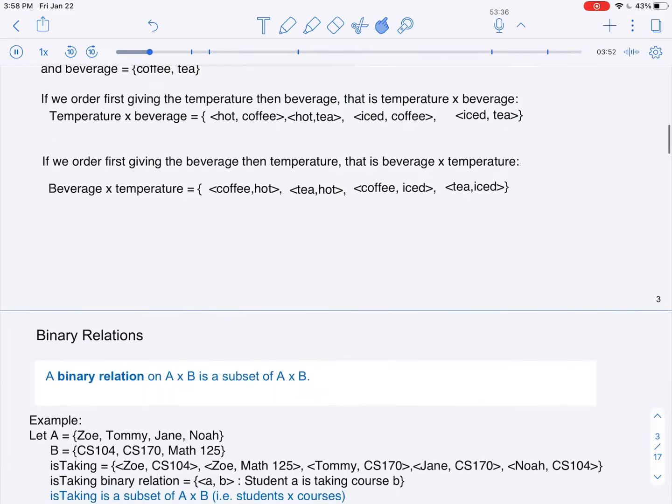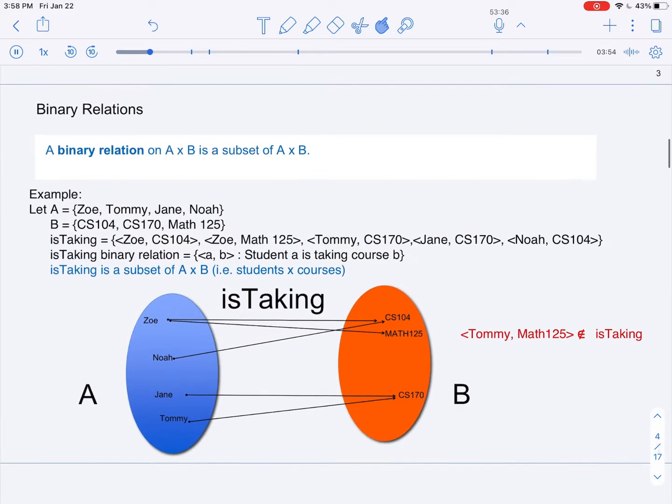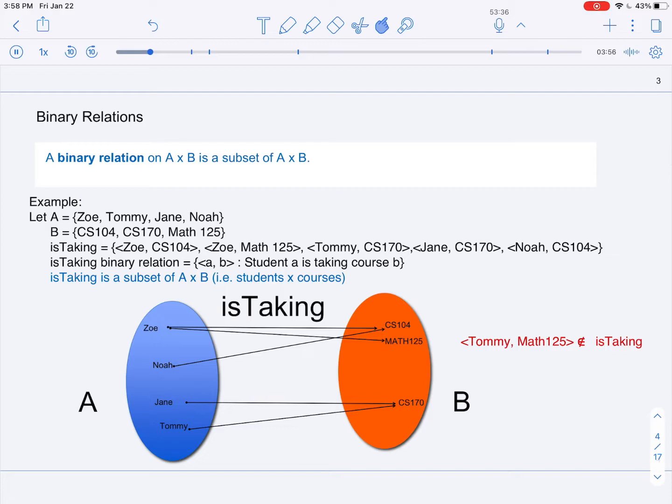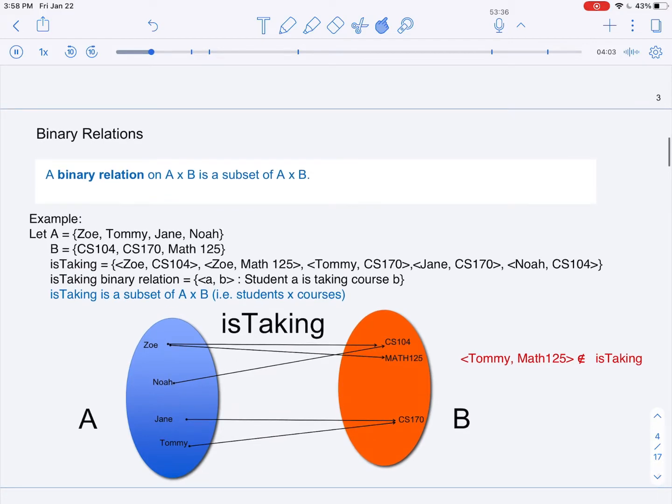Now it turns out that the Cartesian product is very important because now we can start thinking about binary relations. A binary relation on the sets A and B is a subset of the cross product of A and B.